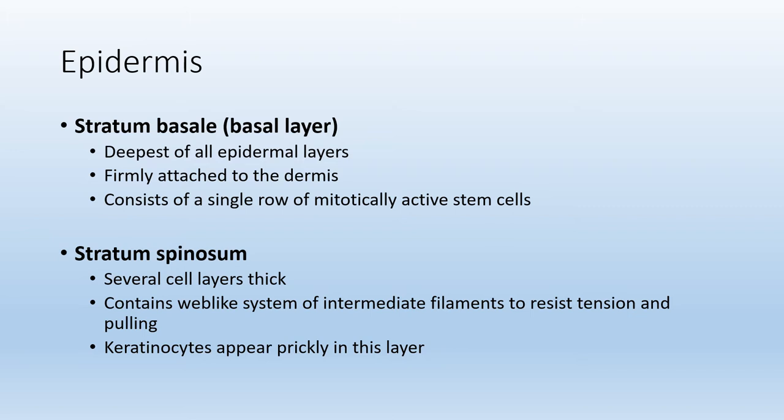What you should really know is the order in which the layers go, either from deep to superficial or vice versa. The stratum basale is the basal layer — the deepest of all layers, anchored to the underlying dermis or connective tissue proper. The stratum basale is the mitotically active layer, meaning that is where we see cells regenerate. As they regenerate, they move towards the top or towards the apical surface.